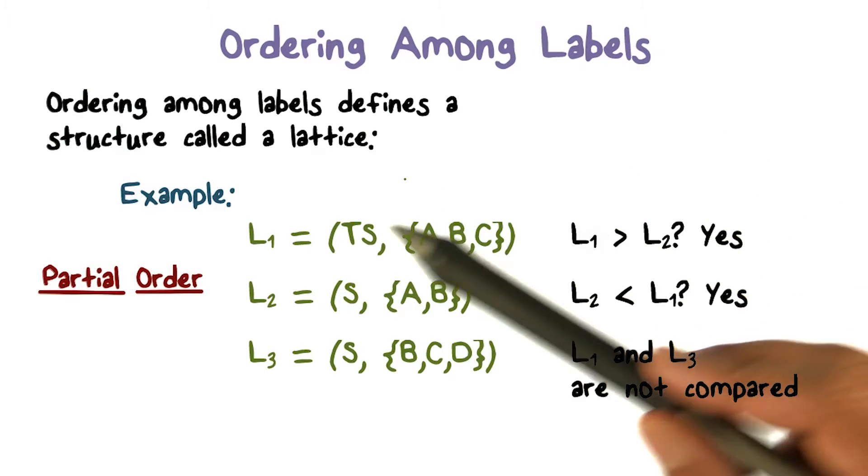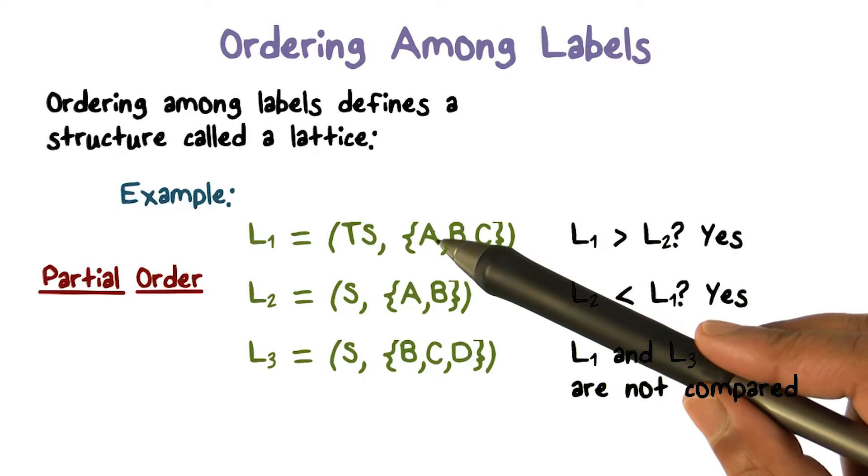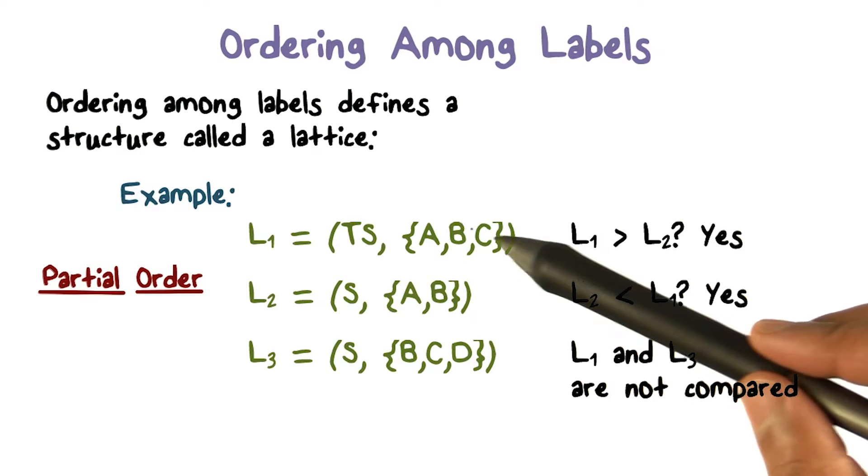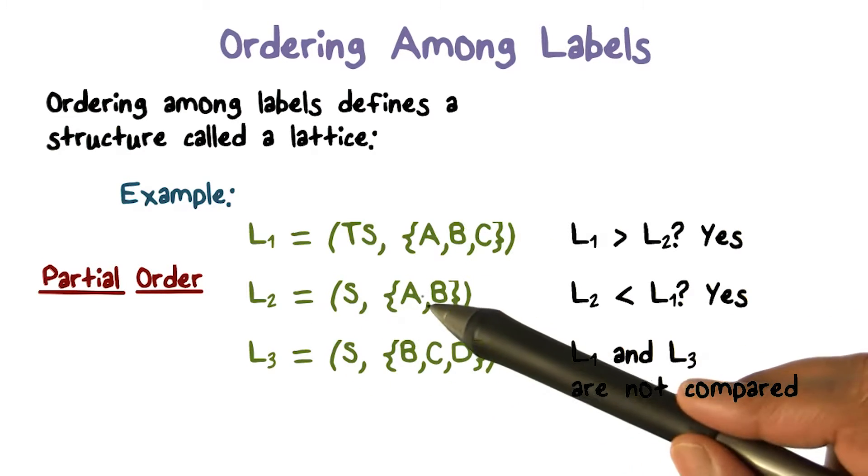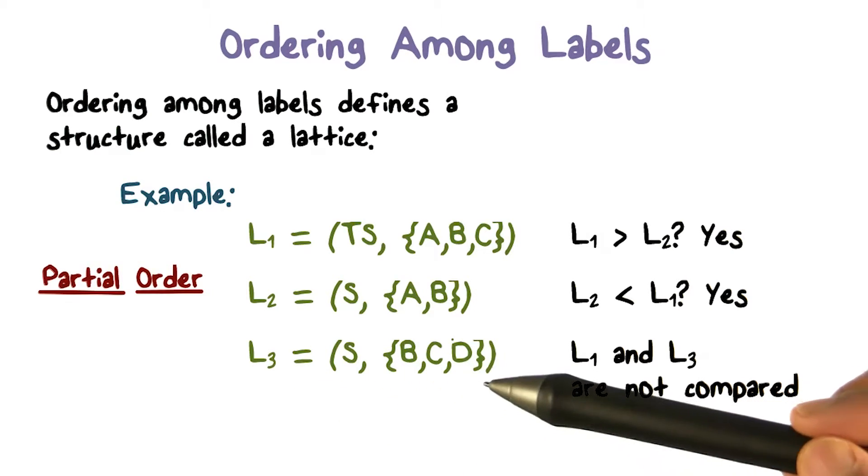Comparison among labels, let's look at a quick example. L1 is TS, and its compartment has these three categories, AB and C. L2 is secret with AB, and L3 is secret also with BCD as the categories.